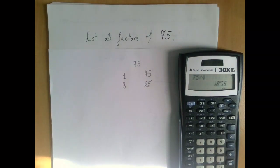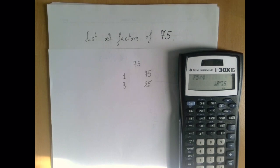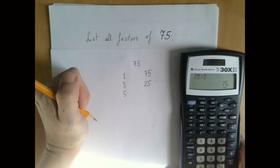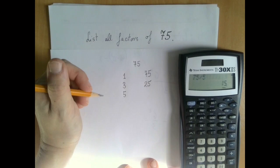There is a rule for divisibility by 5: if the last digit is 0 or 5, then the number is divisible by 5. 75 is divisible by 5. We can divide it using the calculator or paper: 75 divided by 5 is 15.